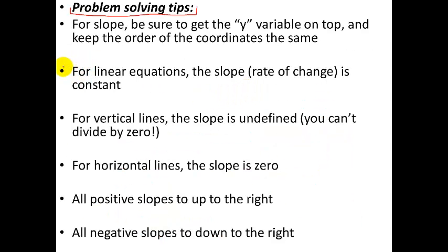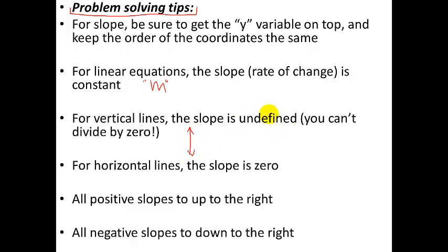Second problem solving tip: for linear equations, the slope or rate of change is a constant. Once you find the value m, that value does not change — once you know it in one part of the equation, you can keep it the same throughout. A couple of special cases: for vertical lines, meaning the line goes straight up and down, the slope is undefined because you can't divide by zero.